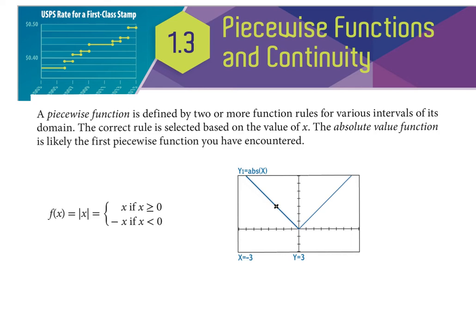A piecewise function is when you have pieces of different functions put together. A step function would be y=3, y=4, y=5 — that's a step function. Another type is absolute value. Absolute value is an example of a piecewise function — when you graph it, it looks like a linear equation going down, and then at a point it changes completely and you have a linear equation going up.